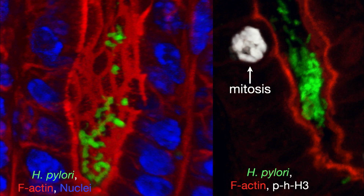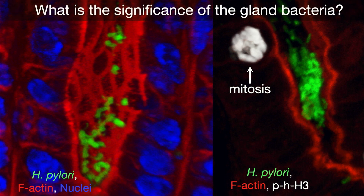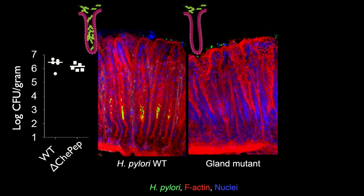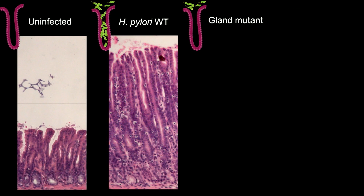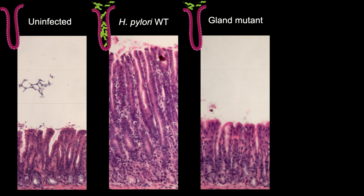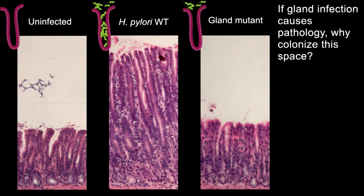We've shown that these bacteria are actually altering the stem cells. We wanted to know: are these bacteria good for anything? We made a chemotaxis mutant that can colonize at the same level as wild type, but when we looked in the glands, they were only up in the mucus — not in the glands. Using this mutant, we asked what are the gland bacteria good for? If we look for pathology — hyperplasia and inflammation — the gland mutant doesn't cost much. So location matters: if bacteria cannot go and interact with that region, there is little disease in the animal model.